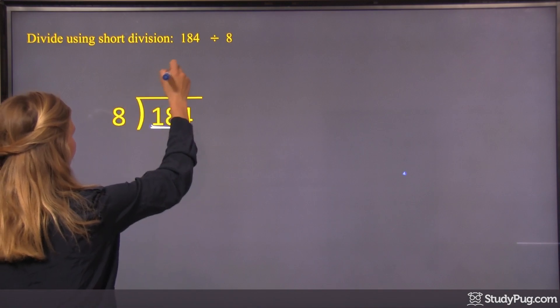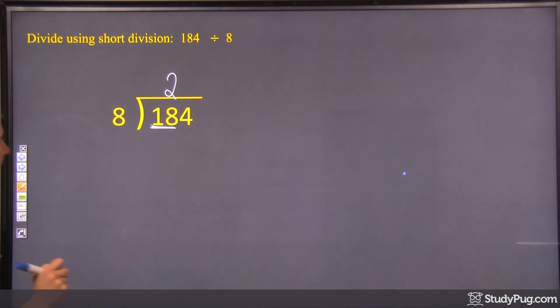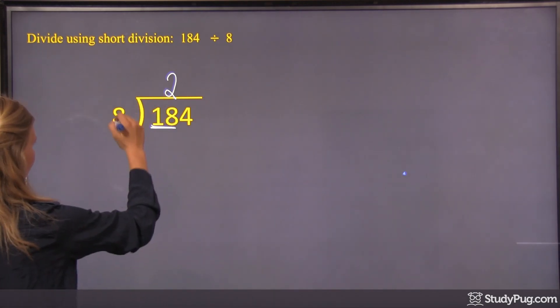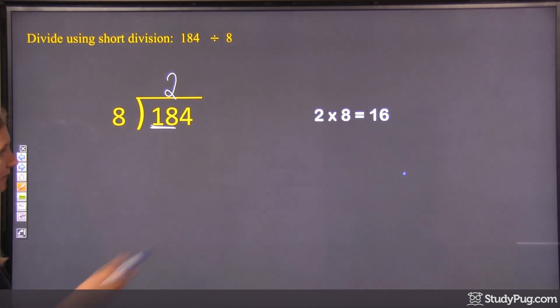So 18 divided by 8, 8 fits in to 18 twice. Okay, so in long division, what we would do then is we would do 2 times 8. We'd get 16, right?